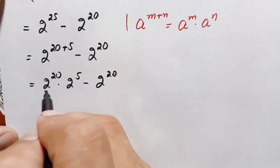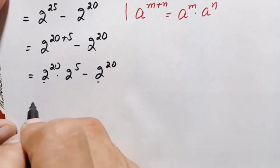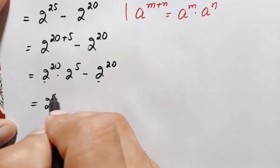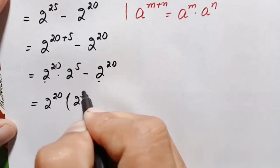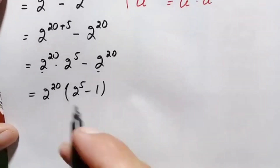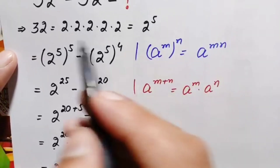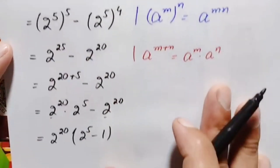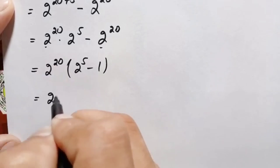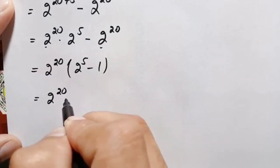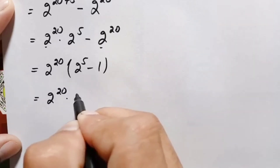The factor 2 raised to power 20 is common in both terms, so we take it out: 2 raised to power 20 times the quantity 2 raised to power 5 minus 1. Since 2 raised to power 5 equals 32, this becomes 2 raised to power 20 times 31.